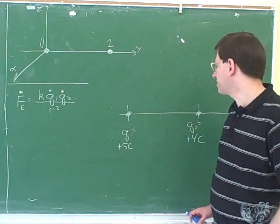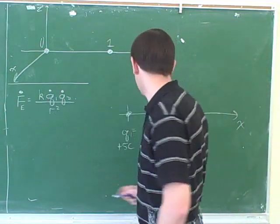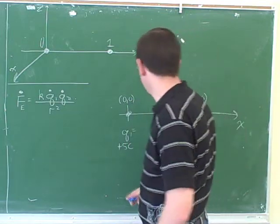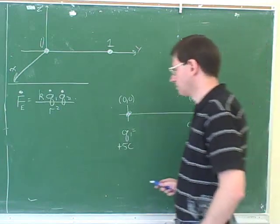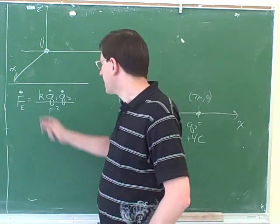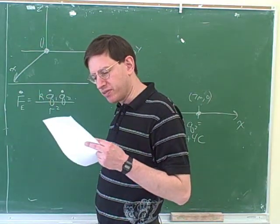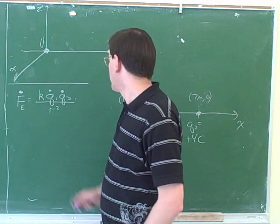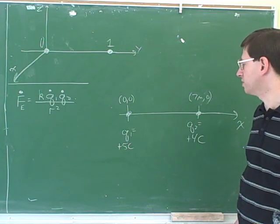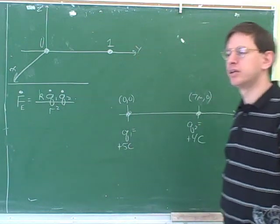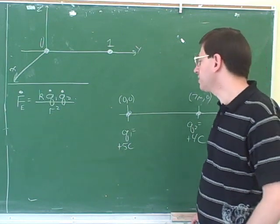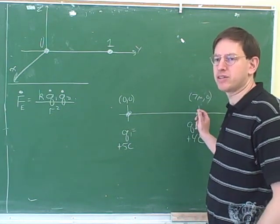For example, how would we find the magnitude of the force on Q2? We could just plug into this equation. We'd have to look up K — they don't give you K here because you're supposed to write it as K, but we could look up the constant. Then we'd plug in 5 for Q1 — just the 5, not the sign, because it's a magnitude — and 4 for Q2, and 7 for R, which then gets squared. Everything's in standard units, so we can plug in all those values and everything will come out right, giving us the magnitude of the force on charge 2.